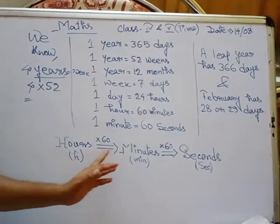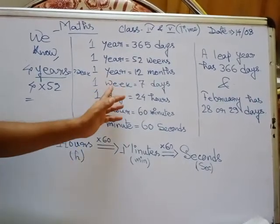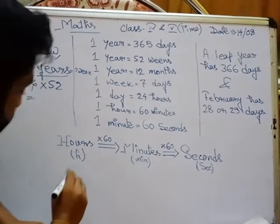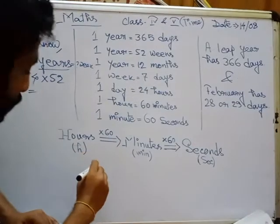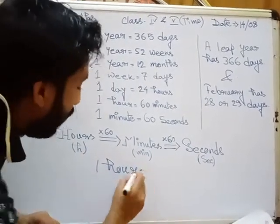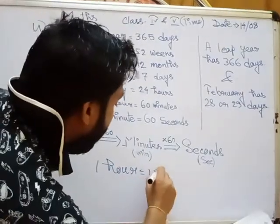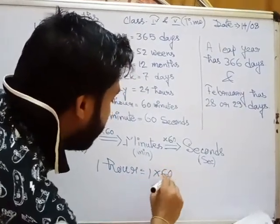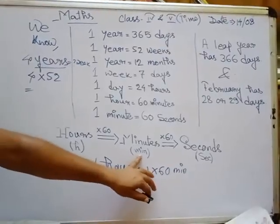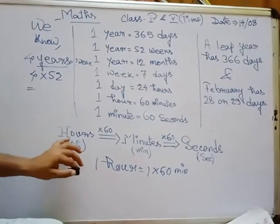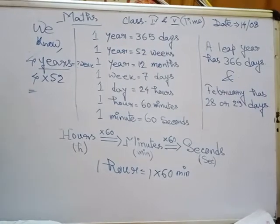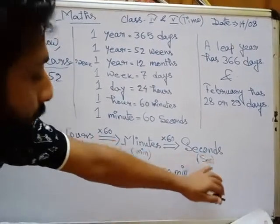1 hour is equal to 60 minutes. If we convert the hour into a minute, we should multiply by 60. The short form of minute is 'min', the short form of hour is 'hr', and second is 'sec'.